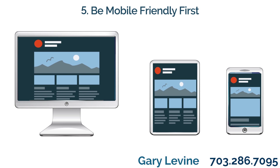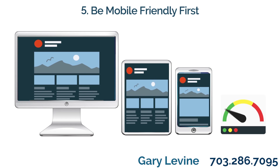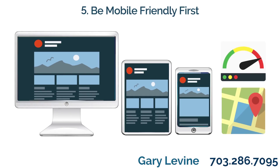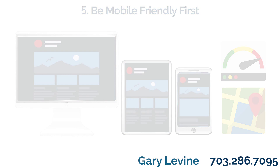Five: Be mobile friendly first. The latest Google algorithm changes have significantly impacted mobile search. Elements like page speed, a responsive site design, and local search optimization are more important than ever. If your campaigns fail to be mobile friendly, you can expect to miss out on the rapidly growing mobile audience.